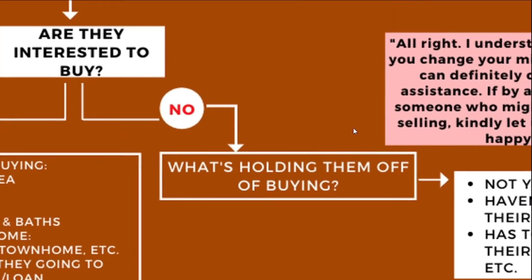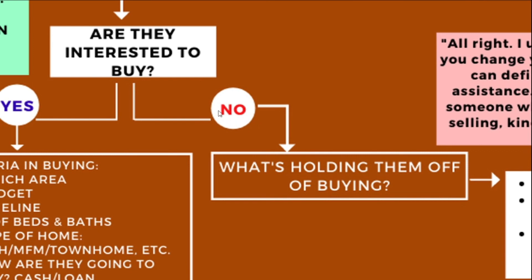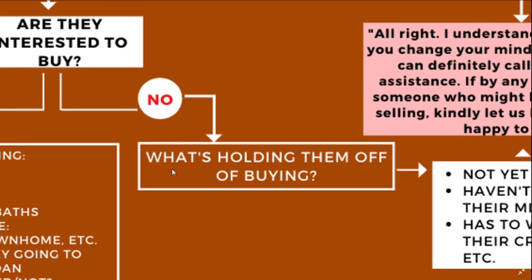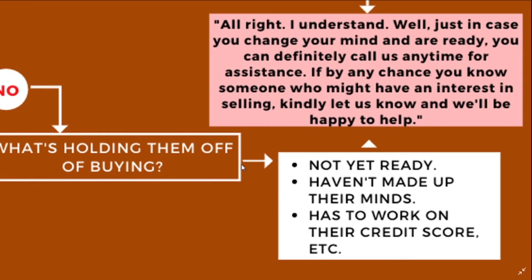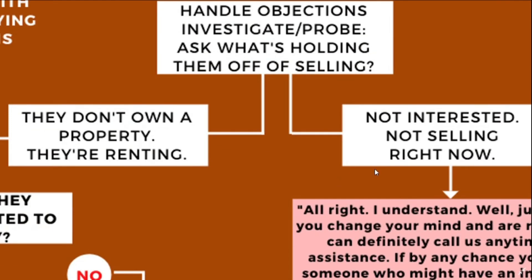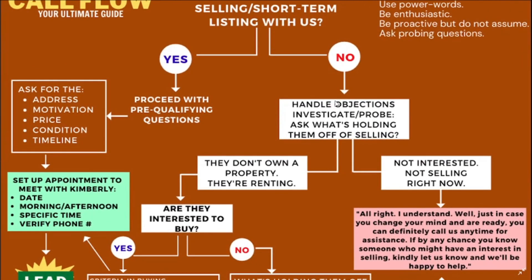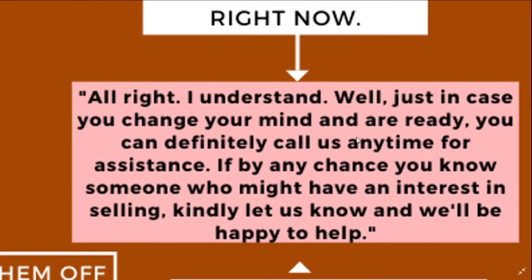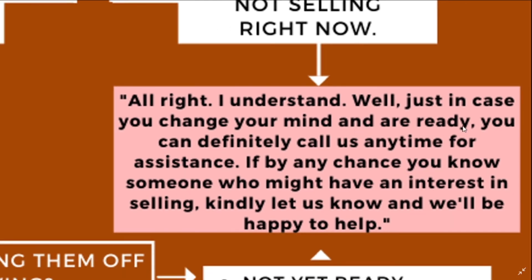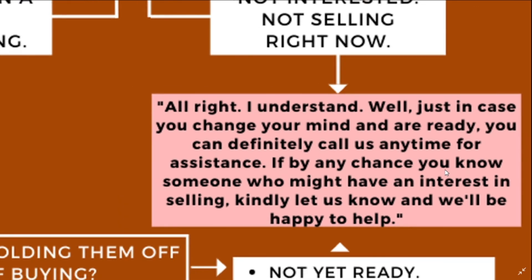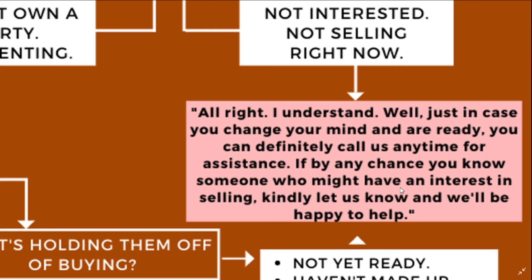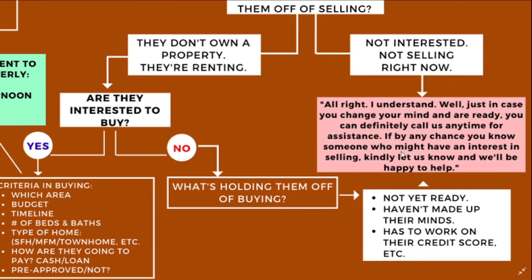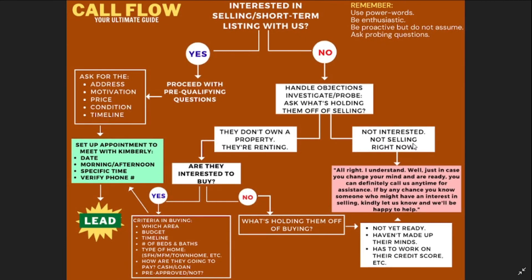Now, what if they say no to buying? Again, probe — there's nothing wrong in asking. If they give a reason, deliver the suggested script. Going back to the part where they say no to selling, probe again. If they say they're not interested or not ready to sell right now, proceed to delivering the suggested script anyway. Notice that the suggested script doesn't just let them know they can call anytime — it also has an opportunity to ask for referrals. Keep in mind that when they say they're not yet ready, you can touch base with them after a few weeks to see where they stand on deciding whether to sell or buy. Take note of that prospect and call them back after a few weeks or months.